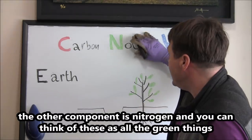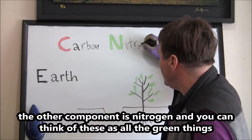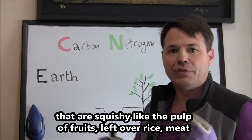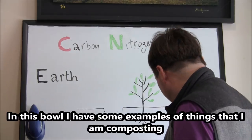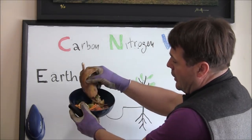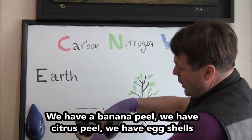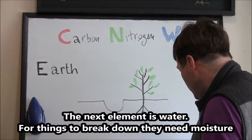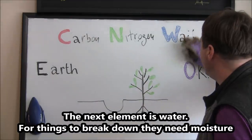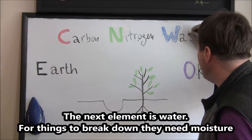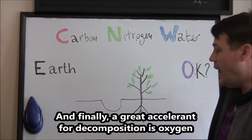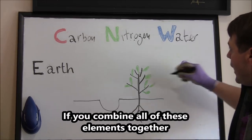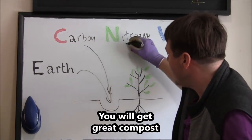The other component is nitrogen, and you can think of these as all the green things that are squishy, like the pulp of fruits, leftover rice, meat. In this bowl I have some examples of things that I'm composting: a banana peel, citrus peel, eggshells. All of these are things that are considered to be nitrogen-rich. The next element is water — for things to break down, they need moisture. And finally, a great accelerant for decomposition is oxygen. If you combine all of these elements together, you will get great compost.